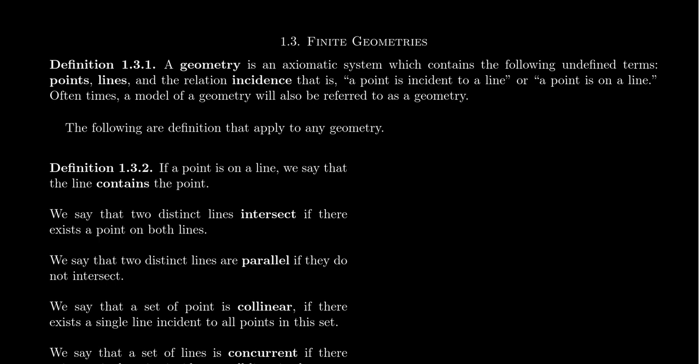The first definition we're going to define is 'contains.' If a point is on a line — that is to say, if a point is incident to a line — we say that the line contains the point. When it comes to points and lines, this incidence relation can go either way: you could say a point is incident to a line, or a line is incident to a point. The second phrasing isn't used as commonly, but it is acceptable. We would typically say that a point is on a line; we rarely would say that a line is on a point.